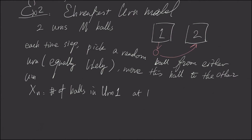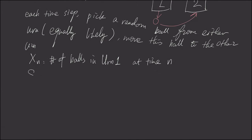At time n. Apparently the state space is zero till capital M. So zero means there is no ball in urn number one, and m means there are m balls, like all the balls in urn number one.